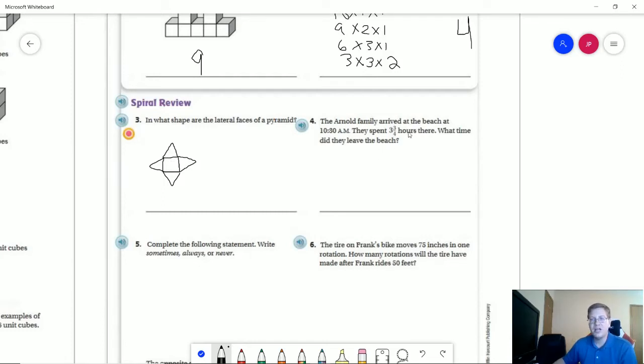For number four, we can just use elapsed time and count forward. So I would count from 10:30 forward three hours to get to 1:30 p.m. Then I would do a half hour to get to 2 p.m. And then my last quarter hour to get to 2:15 p.m.